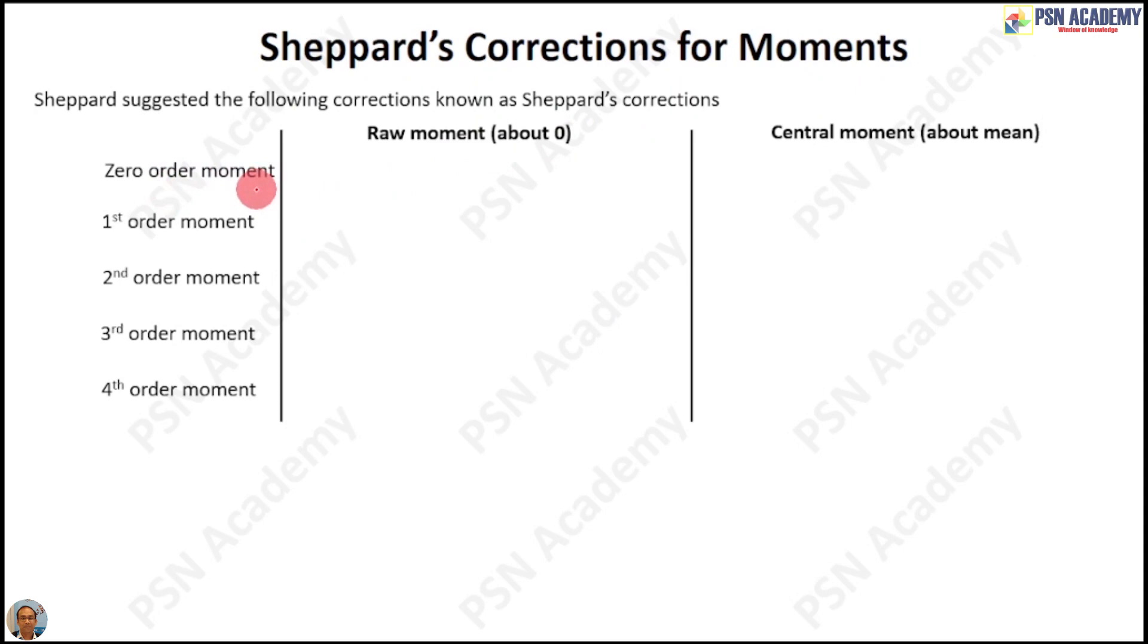For the 0th order moment, for the raw moment, you have no correction, as well as no correction for the central moment. For the 1st order moment, you have no corrections for the raw moment and the central moment. In the second order moment, you have a scope for correcting your moment. The corrected moment will be denoted by m₂'(corrected), and this equals your computed moment minus h² by 12. This h is actually the width of the class interval.